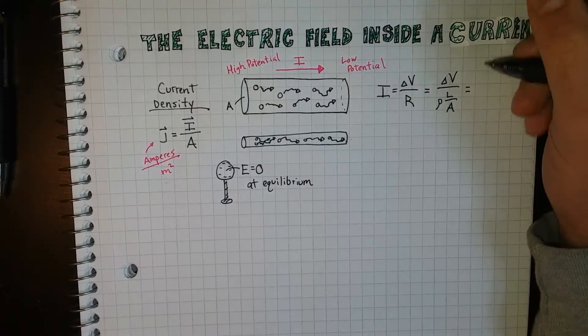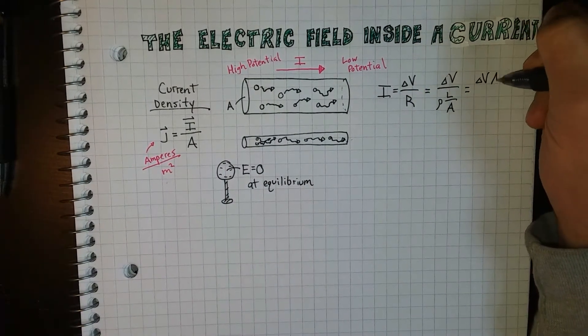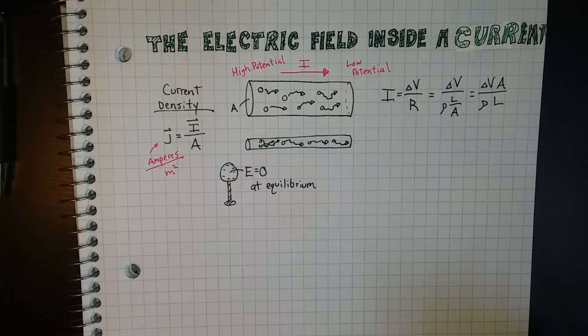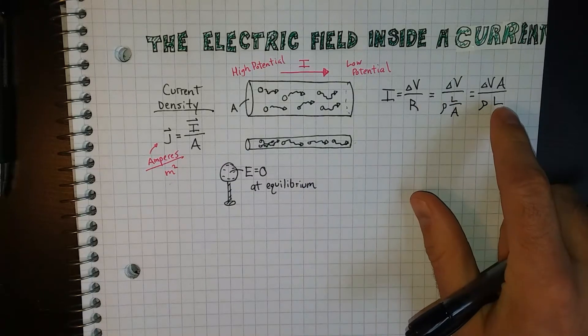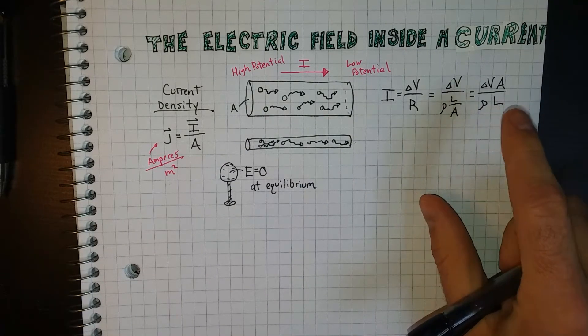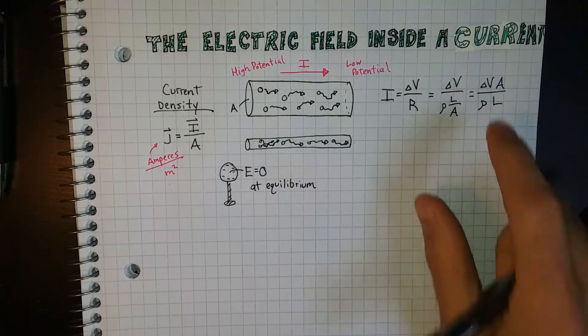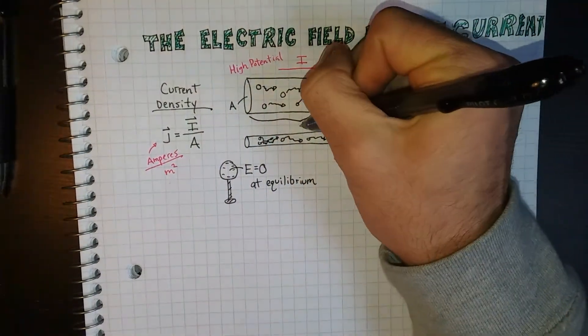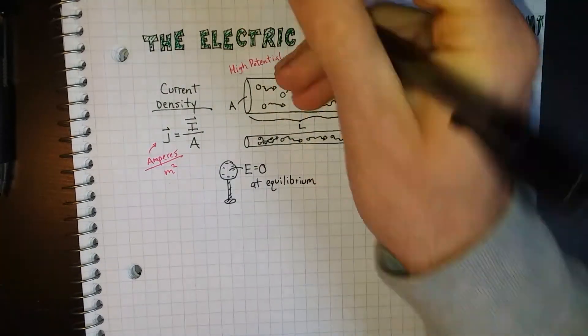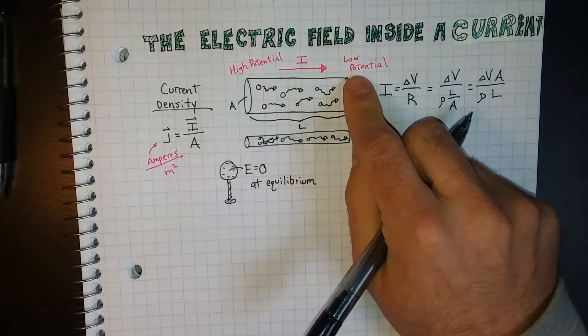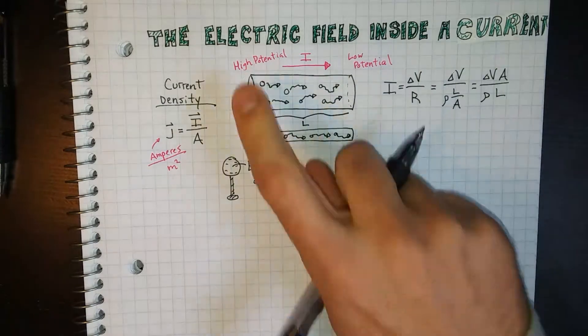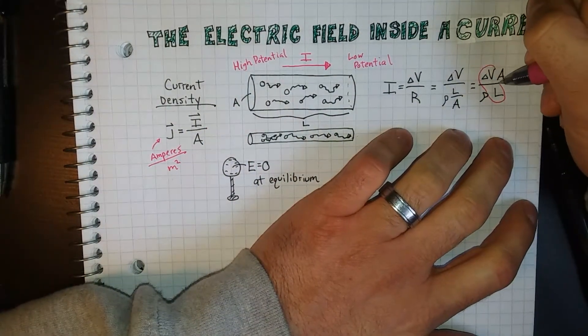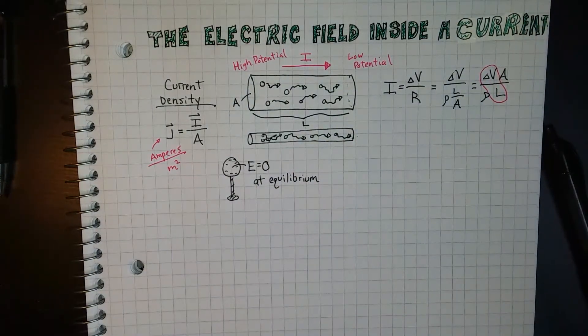Rearranged, this looks like delta V times A equals I times rho times L. And then some things can happen with that delta V over L term. Because if this wire is of length L, and has a potential here V and a potential here of some other V, V final and V initial, that delta V over L term in there is just what we call an electric field.